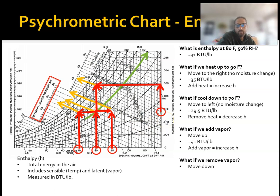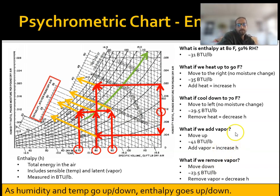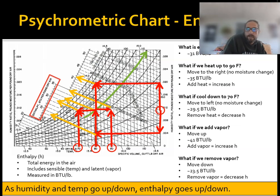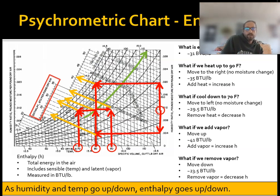If we decrease moisture and move down, we drop to 23.5 BTUs per pound. The numbers aren't particularly important — what is important is the relationship: as humidity goes up, enthalpy goes up; as humidity goes down, enthalpy goes down; as temperature goes up, enthalpy goes up; temperature goes down, enthalpy goes down. It's a positive relationship. Enthalpy is total energy in the air, and moisture carries all this latent heat, so if you add moisture to the air, you add enthalpy.